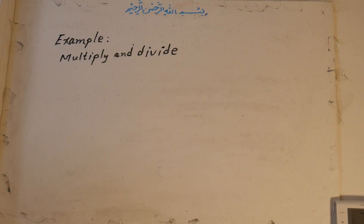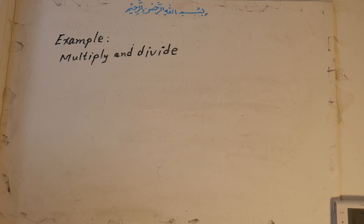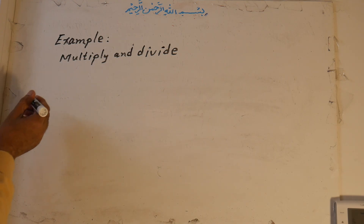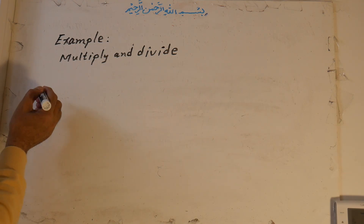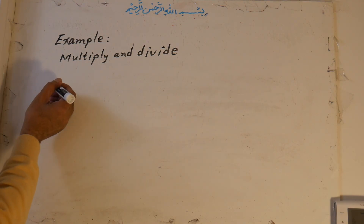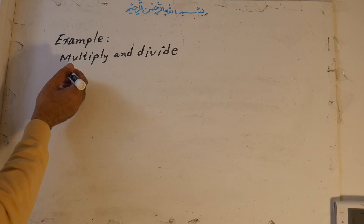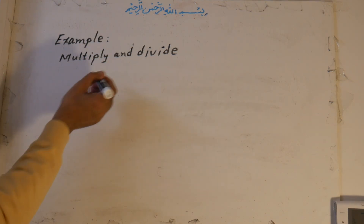Sometimes we have both multiplication and division operations at the same time, or simultaneously. In that case, we first do multiplication then division.